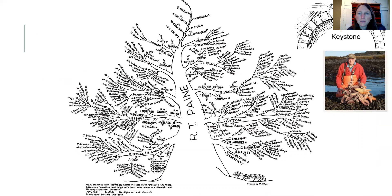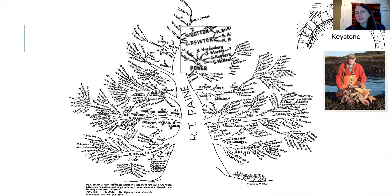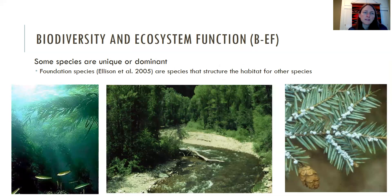Here's a picture of Robert Paine's academic tree. If you zoom in, you can see Jay Marks — Jay Marks was my PhD supervisor. So technically, if we were to add me and all of you to this tree, this is where you would belong on Robert Paine's academic tree.